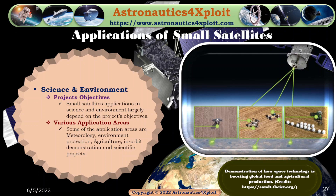Science and environment is another application of small satellites. Small satellite applications in science and environment largely depend on the project's objectives. Some of the application areas are meteorology, technology, environmental protection, agriculture, innovative demonstration, and scientific projects. This picture shows a demonstration of how space technology is boosting global food and agricultural production.